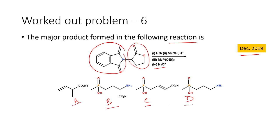We end up with four different products as options A, B, C, and D. The first product A does not have any group containing the phosphorus unit, so it can be ruled out. The other three have the phosphoric acid group present. We need to look at the mechanism to find out how the reaction actually proceeds.